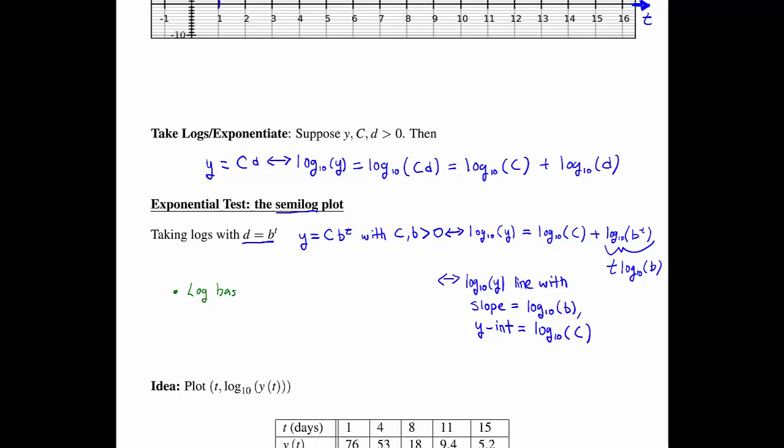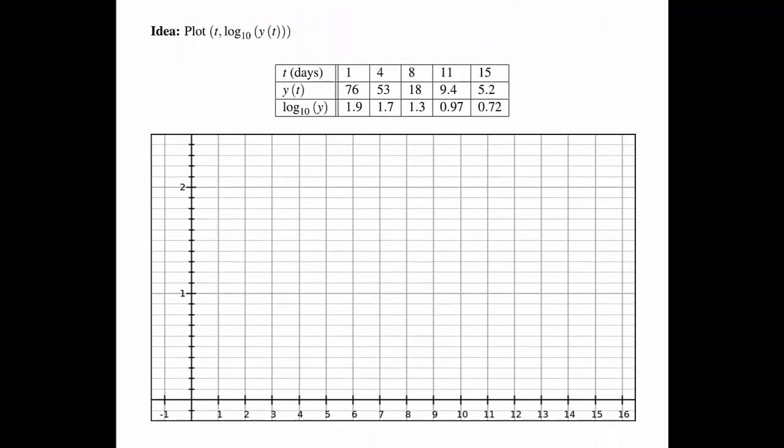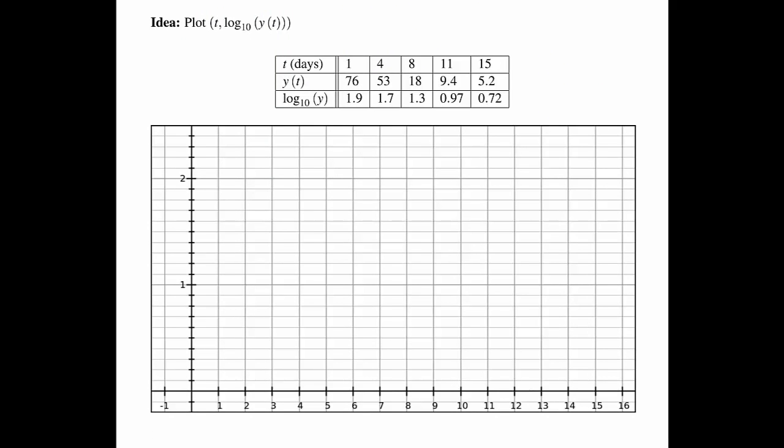The log base doesn't really matter. I've just chosen to use 10 here. As long as you're consistent and use the same base everywhere, the same sort of thing will happen. Log base 10 is a bit of a convention. So now the idea is, let's not plot y as a dependent variable, but rather log y. And if we do that, we can copy these first two rows just as before. But now let's add in a third row, which is just the log of the second. That's the new dependent variable.